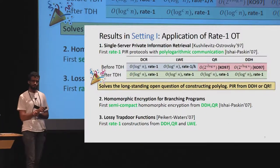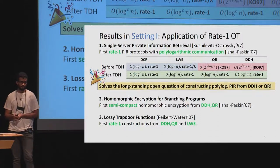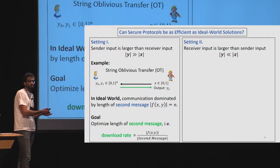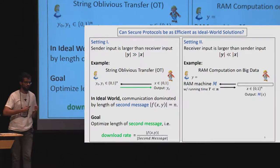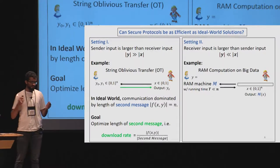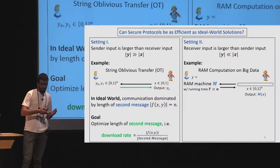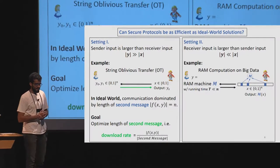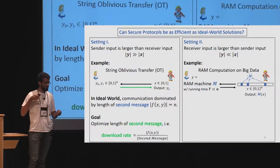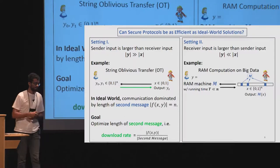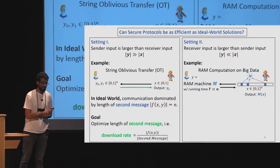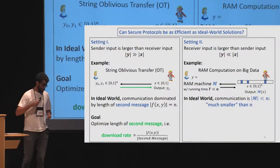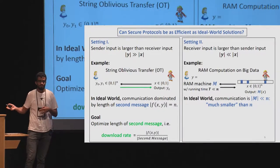The second scenario is when the receiver's input is the largest. The generic example: Bob has a huge database of size n and Alice has a small RAM machine with running time t much smaller than n. The goal is for Bob to learn the output of the machine M run on his database X. Since t is much smaller than n, M looks at very few locations of the database. We want to achieve this functionality while keeping both M and X private.